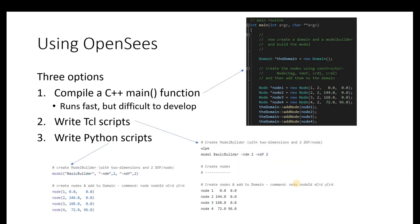There are three options for using OpenSees. The first, which is lesser known, is to compile a C++ main function. You define a main function, then create objects available within OpenSees and manually set everything — defining a domain, defining nodes, adding those nodes to the domain. It's a lot of lines of source code, so these main functions are difficult to develop and very few people do them. It runs very fast because it's native C++.